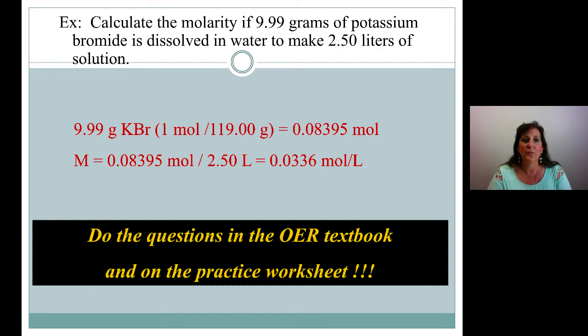So 9.99 grams times 1 divided by 119 gives us 0.08395 moles. Notice I kept an extra digit there. I did that because that's not my final answer. So keep a few extra digits or just keep it in your calculator.